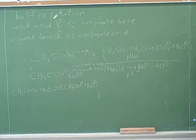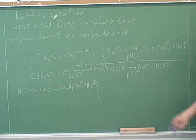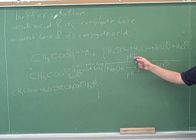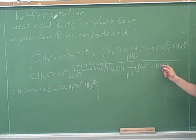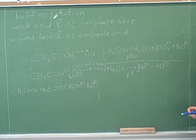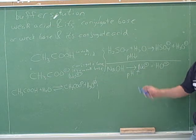This is a pretty straightforward review. If you can do something that produces more hydroniums, that makes the solution more acidic and lowers the pH. And if you can do something that produces more hydroxides, that makes the solution more basic and increases the pH.